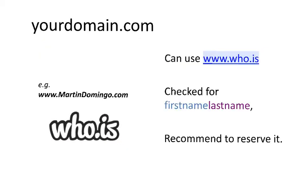If you would like to check whether your desired domain is available, for instance in my case I could check www.martindomingo.com, I go to the website who.is and then check whether this domain is available. I recommend that if your first name and last name dot com is available, you make the investment of booking it for 10 to 15 US dollars per year — maybe not now, but perhaps for later.